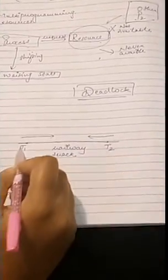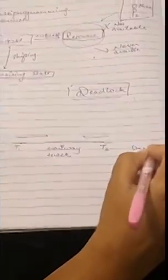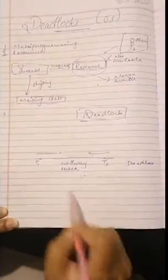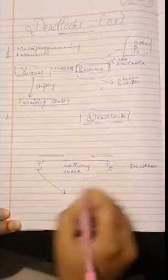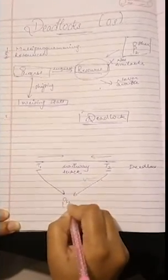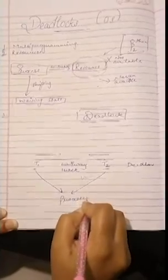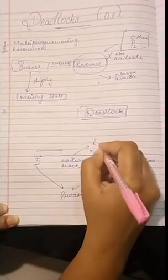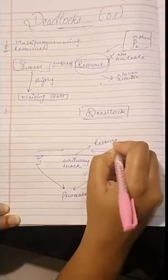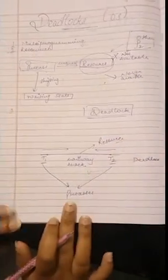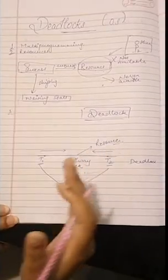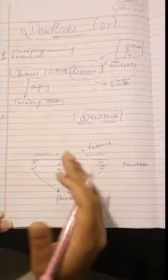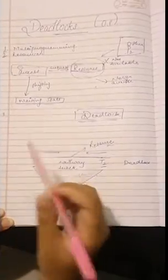Now this is a situation where deadlock occurs. So in this example, the trains T1 and T2 both are represented as processes and railway track is our resource. Similarly, such a situation occurs in operating systems when there are two or more processes holding some resources and waiting for resources held by others.